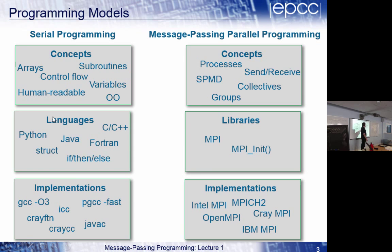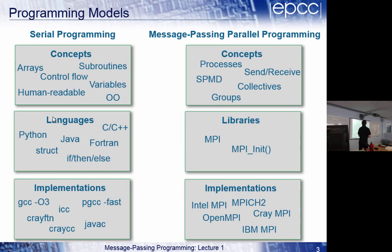What we're going to talk about first are the concepts, which are things like processes, send, receive, SPMD, collectives, and groups. In terms of implementations, there are lots: Intel MPI, Cray MPI, Open MPI, MPICH2. However, the good and bad thing about MPI is there is only one library — everyone else has died. That's a good thing because you just learn MPI and you can program any supercomputer in the world. But it's a mistake to start teaching MPI without understanding the concepts. MPI isn't magic — there are things in it which are hard or more difficult than they need to be.